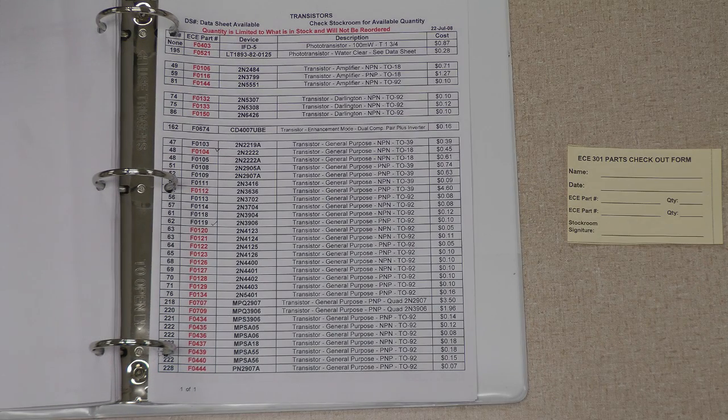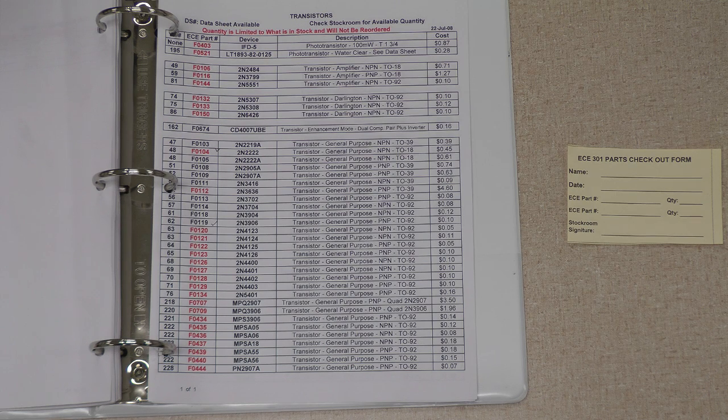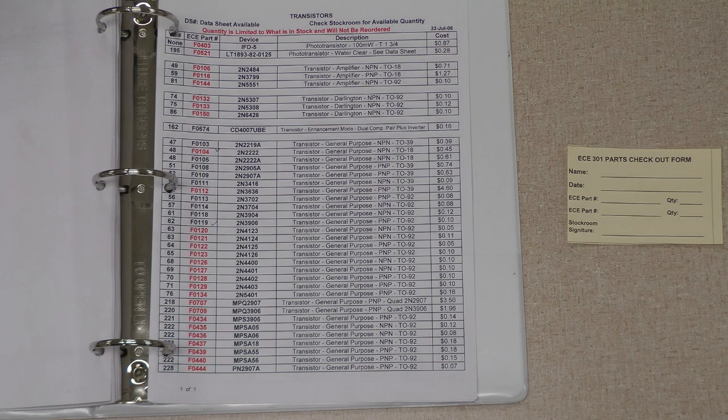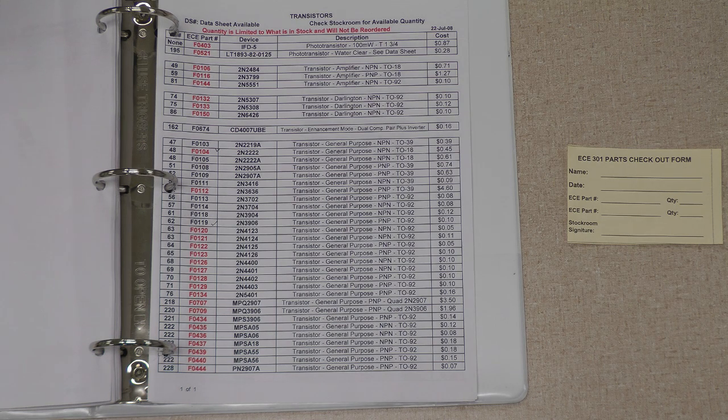An ECE parts checkout list is provided in each of the laboratories. This list is in a three-ring binder and is usually kept on a desk or workspace near the door. Additionally, parts checkout forms are also kept in the same area.